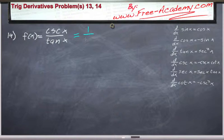So cosecant is 1 over sine of x. This is divided by tangent of x, which is sine of x over cosine of x.